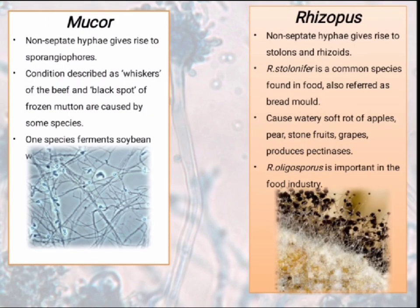We talk about another genus, Mucor. They are non-septate hyphae which give rise to sporangiophores. Conditions described as whiskers of beef and black spot of frozen mutton are caused by some species of Mucor genus. Now we move to another genus, Rhizopus. These are non-septate hyphae which give rise to stolons and rhizoids. Rhizopus stolonifer is a common species found in food, also referred to as bread mould. They cause watery soft rot of apples, pear, stone fruits, grapes and produce pectinases. Rhizopus oligosporus is important in the food industry.